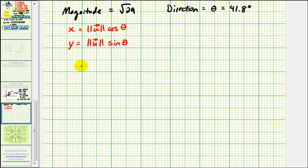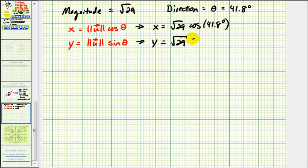We know the magnitude is √29 and the direction is 41.8 degrees. We can find the coordinates of the point, x and y, using these two formulas here. X will equal √29 times cosine 41.8 degrees, and y equals √29 times sine 41.8 degrees.